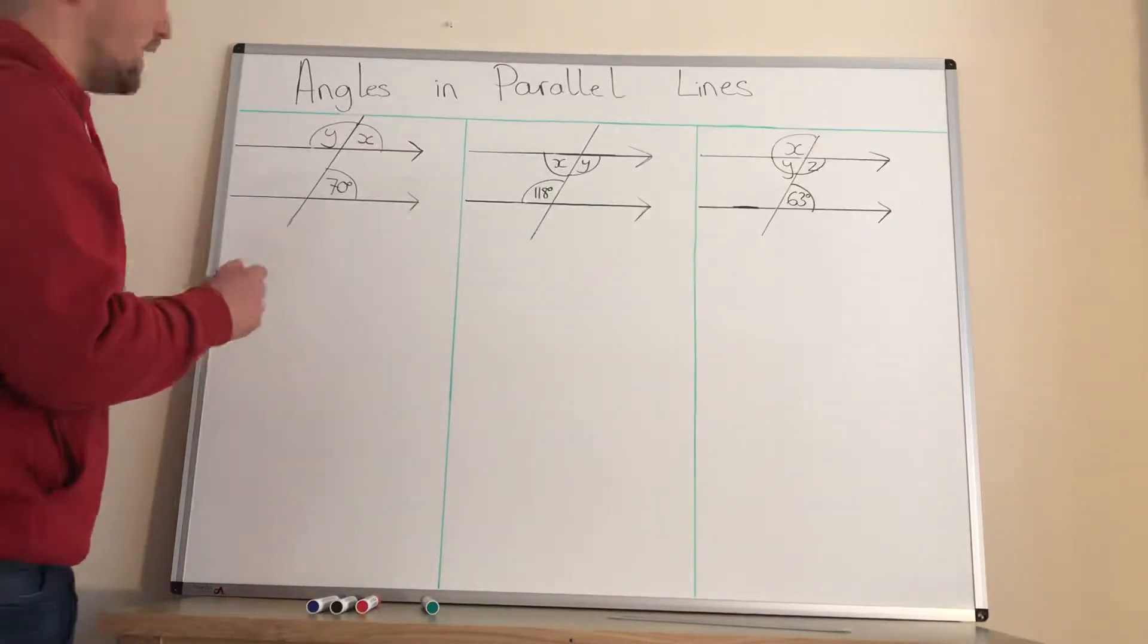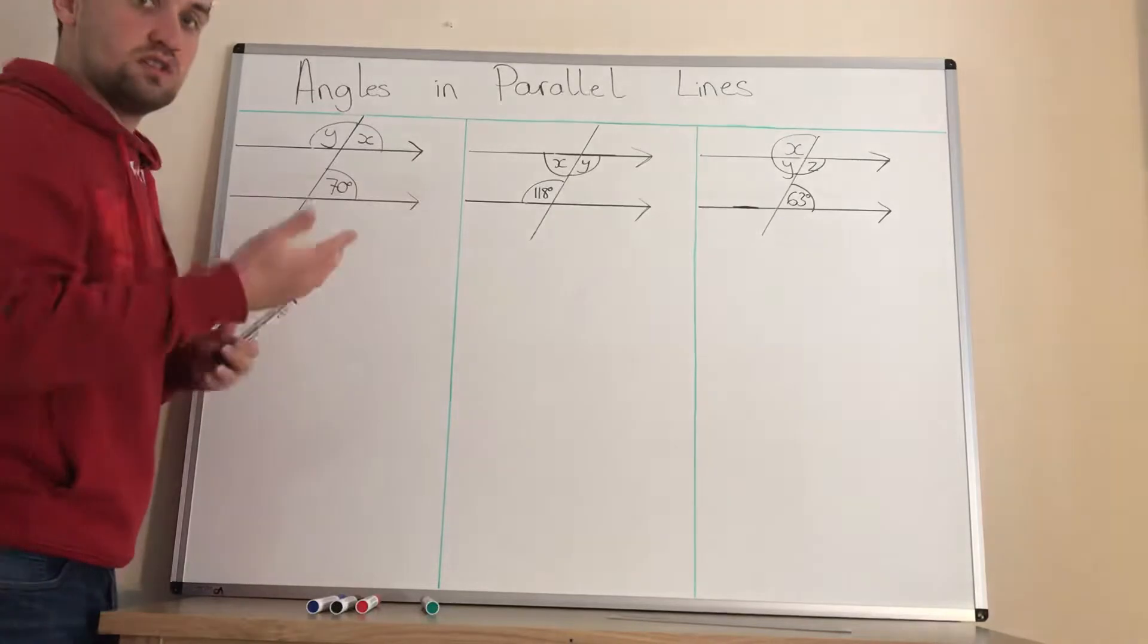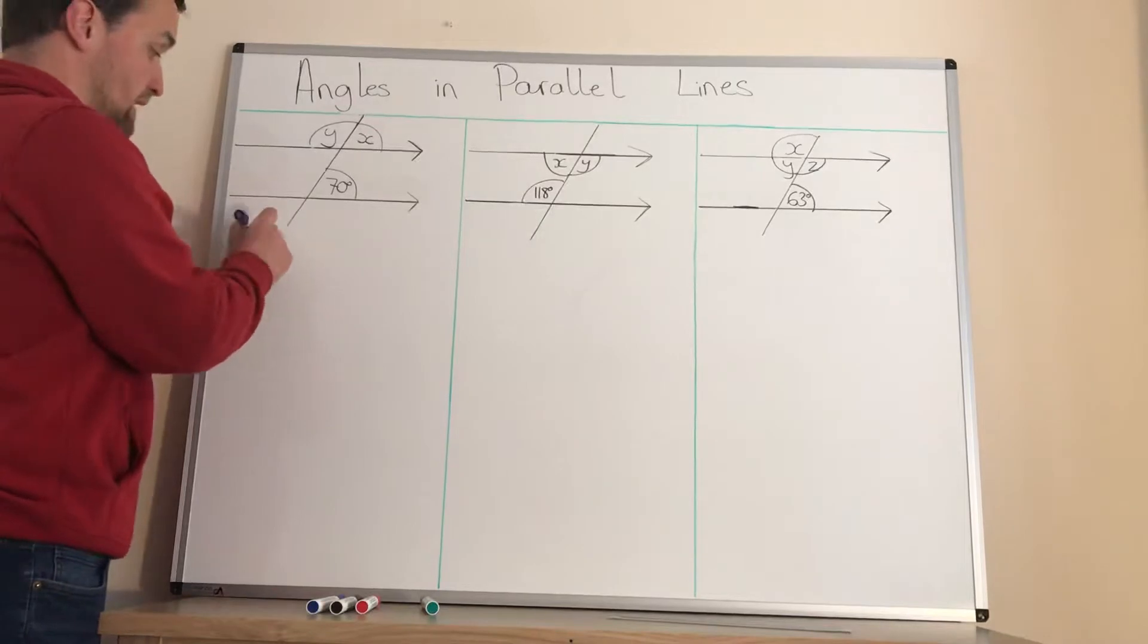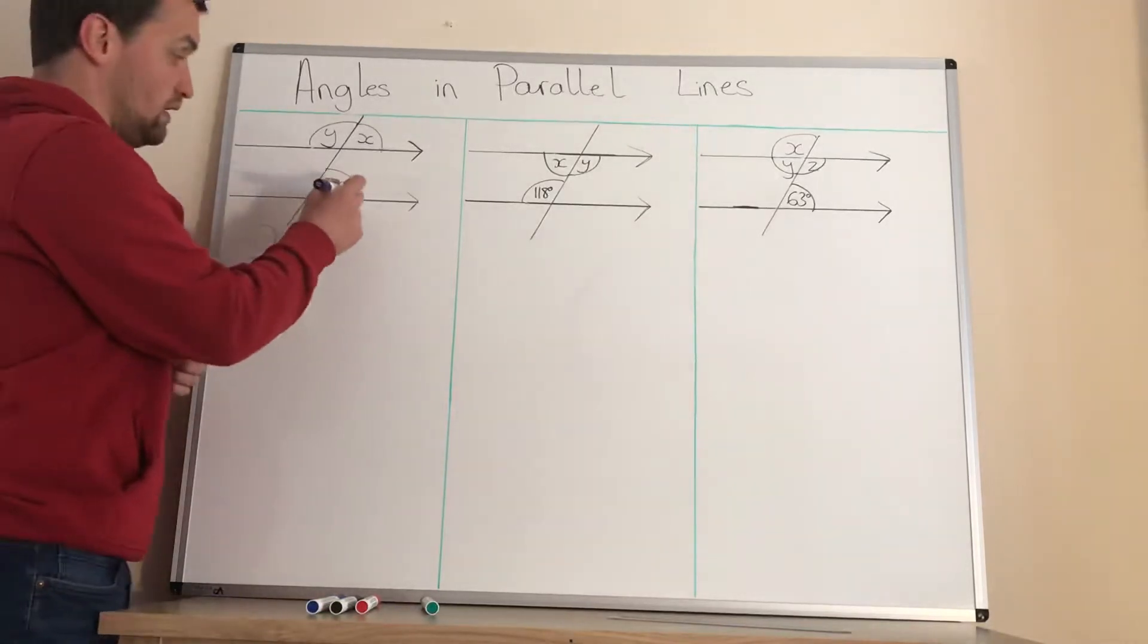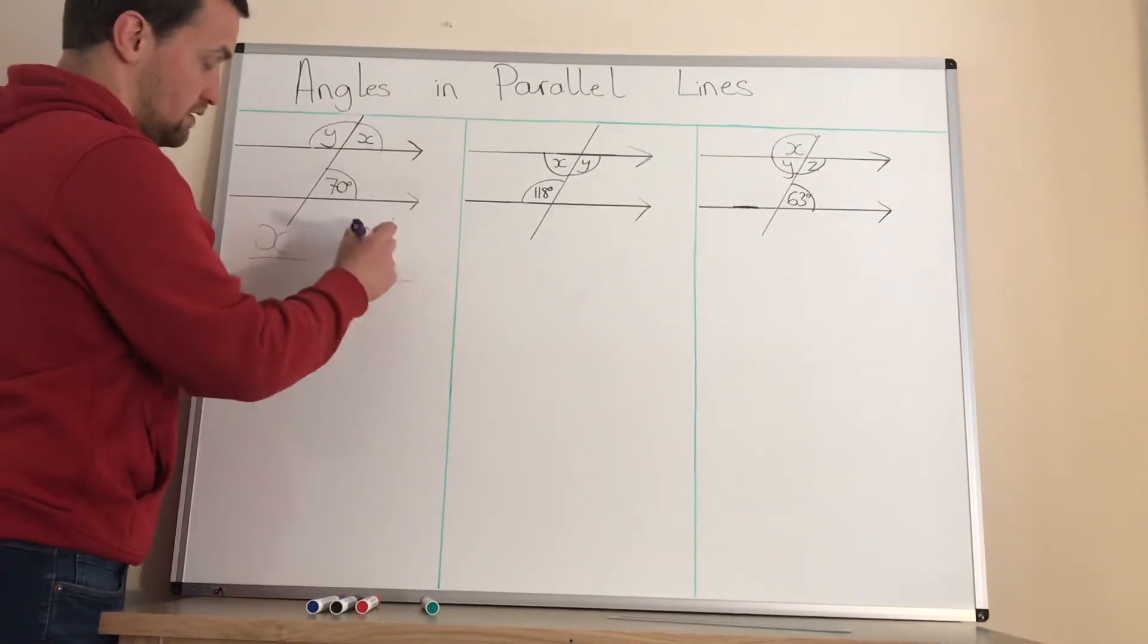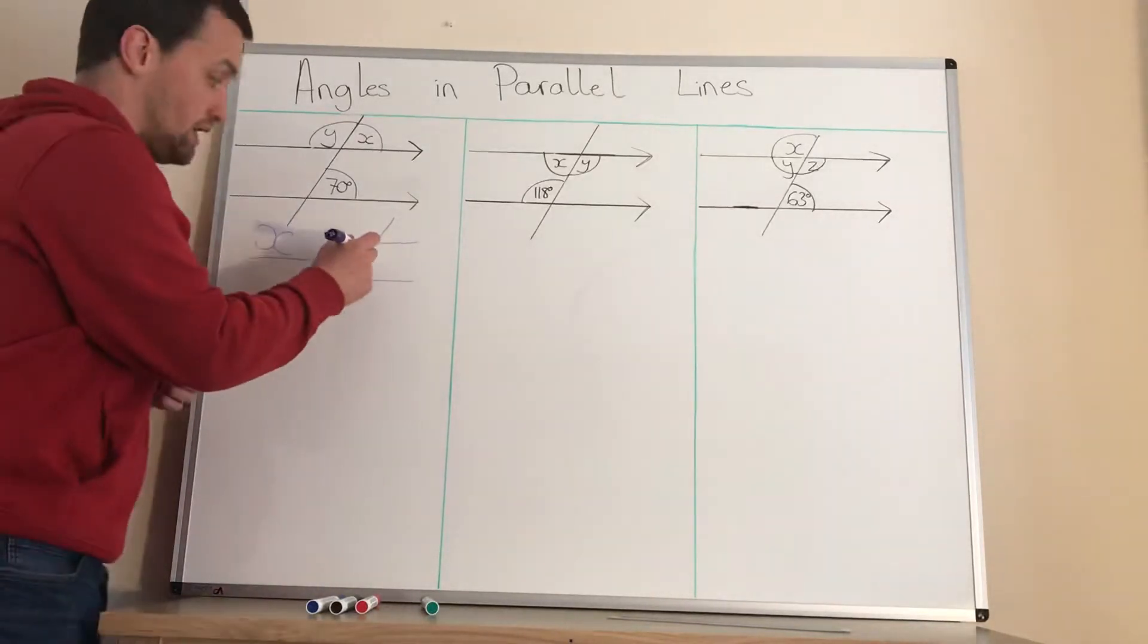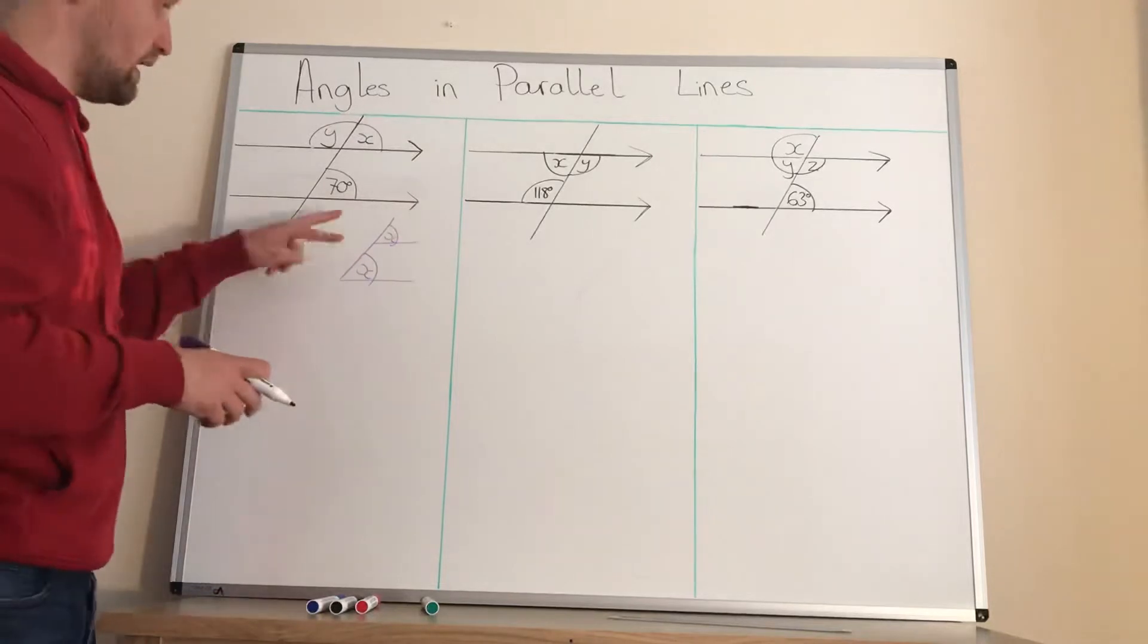First of all, we've got two parallel lines here. We know they're parallel because of the arrowheads there. If we didn't have the arrowheads, we couldn't assume that they were parallel lines. First one, we're going to find what X is and find what Y is. I'm going to find X first because I think that's the easy one. So what we've got here is we've got an upside down F. Now we know that F angle, the corresponding angle, that if you have an angle in here that the angle up here will also be the same.